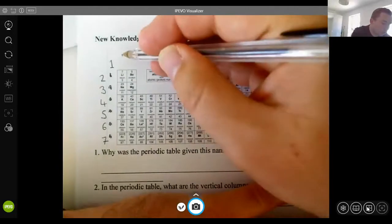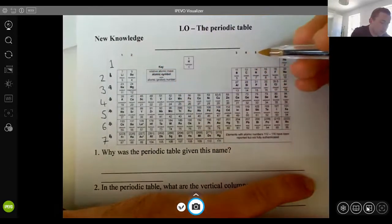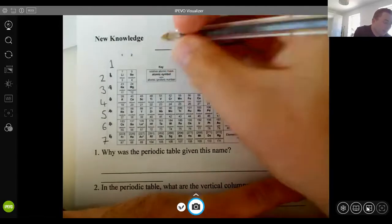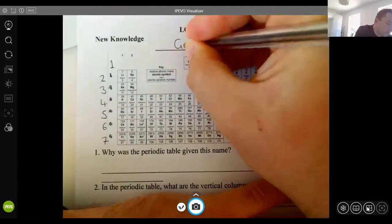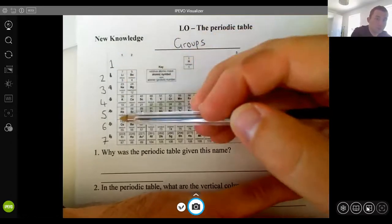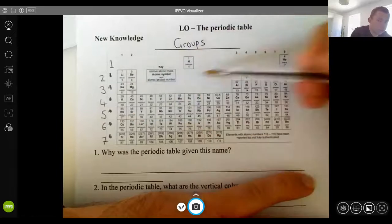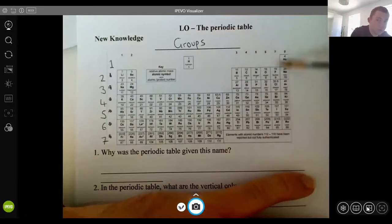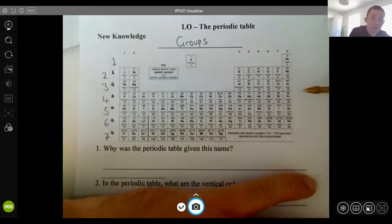Now, along the top, we've got number one, two, three, four, five, six, seven, and zero. These are what we call the groups. So each column is a group: group one, group two, group three, group four, group five, group six, group seven, group zero. They are in their groups.